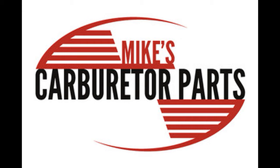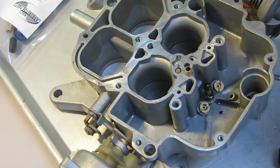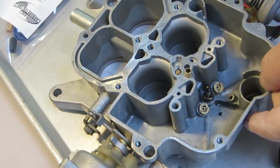Hi, Mike's Carburetor Parts here. I'm working on an Autolite 4,300 four-barrel carburetor, and in particular we're talking about the power jet circuit.